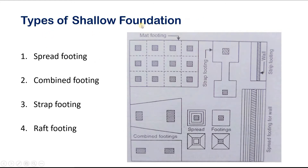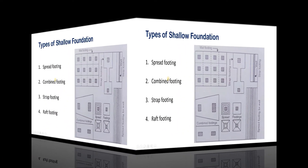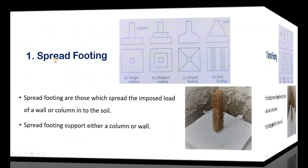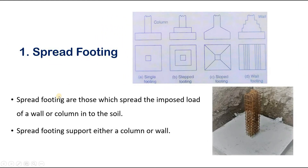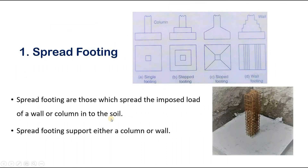From the point of view of design, shallow foundations may be of the following types: spread footing, combined footing, strap footing, and raft footing. Spread footings are those which spread the imposed load of a wall or column into the soil. The spread footing supports either a column or a wall.